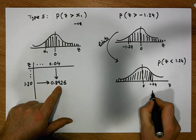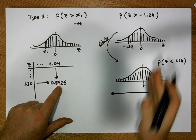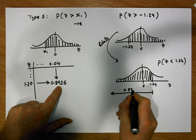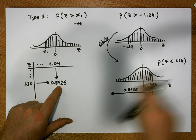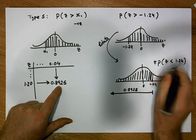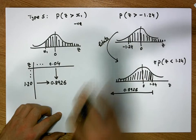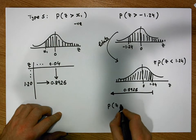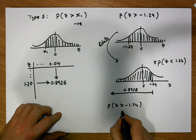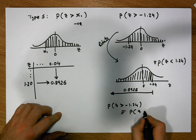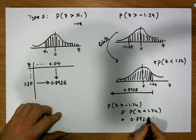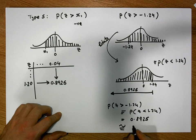Every positive value we look up in our tables always represents the area to the left-hand side of that positive value. So the area to the left-hand side of 1.24 is 0.8925, which is exactly the area we're looking for — equivalent to the area of the original probability with the negative value through rotation. In other words, the probability of observing a z-score greater than minus 1.24 equals the probability of observing a z-score less than 1.24, which equals 0.8925, or 89.25%.